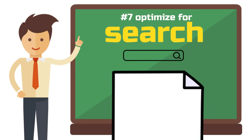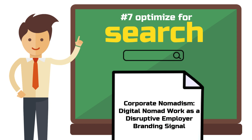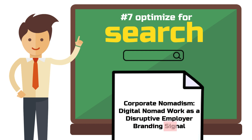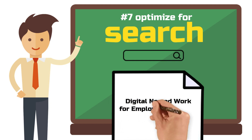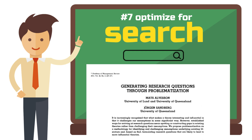So let's quickly analyze the search optimization of our example. Even though I wanted to include the polarizing term 'corporate nomadism,' I still kept 'digital nomad' in there. This is because nobody will search for 'corporate nomadism,' but many will search for 'digital nomad.' The second keyword is 'employer branding,' which is also fully included in the title. Lastly, the keyword about the theory — 'signal' — could be improved. Researchers might search for 'signaling theory,' so one could change the title to 'Digital Nomad Work for Employer Branding: A Signaling Theory Perspective.' However, I still prefer the first version, even though this one would be perfectly optimized for keywords. What I then do is make sure that the keyword 'signaling theory' is included in the abstract, since the abstract is also indexed on those databases alongside the title.